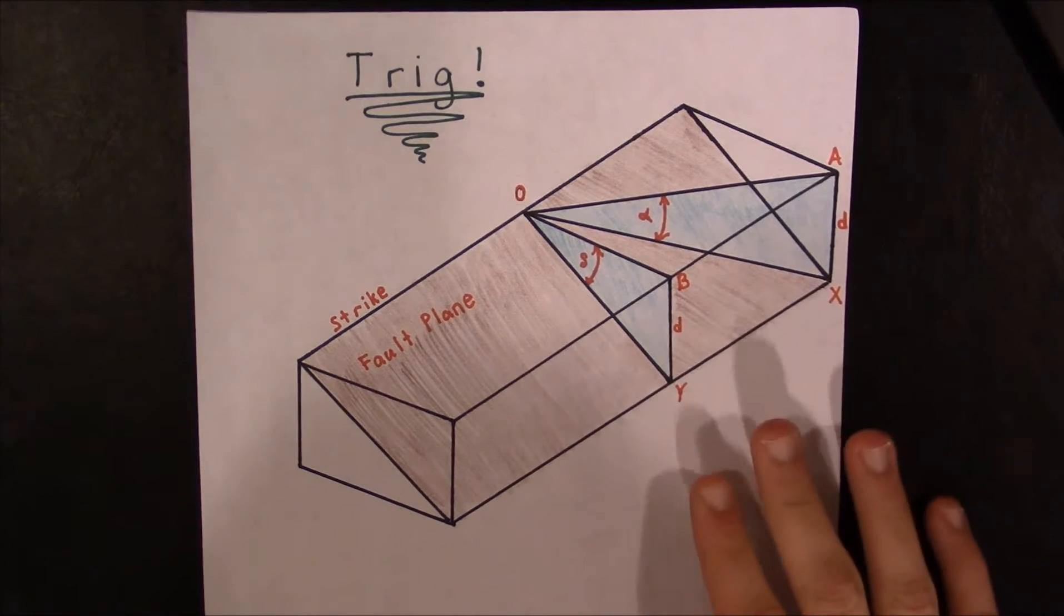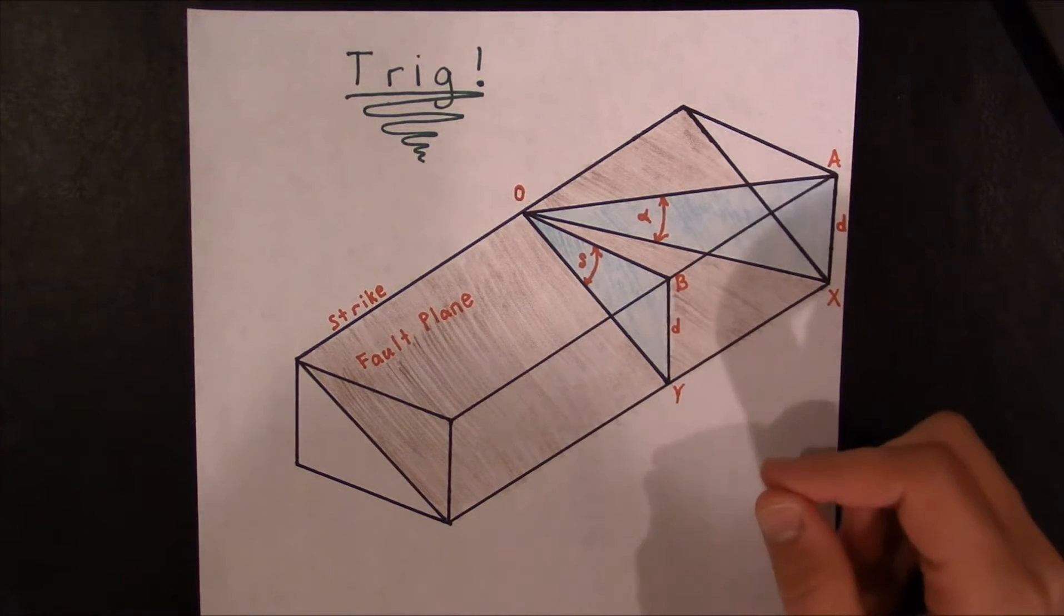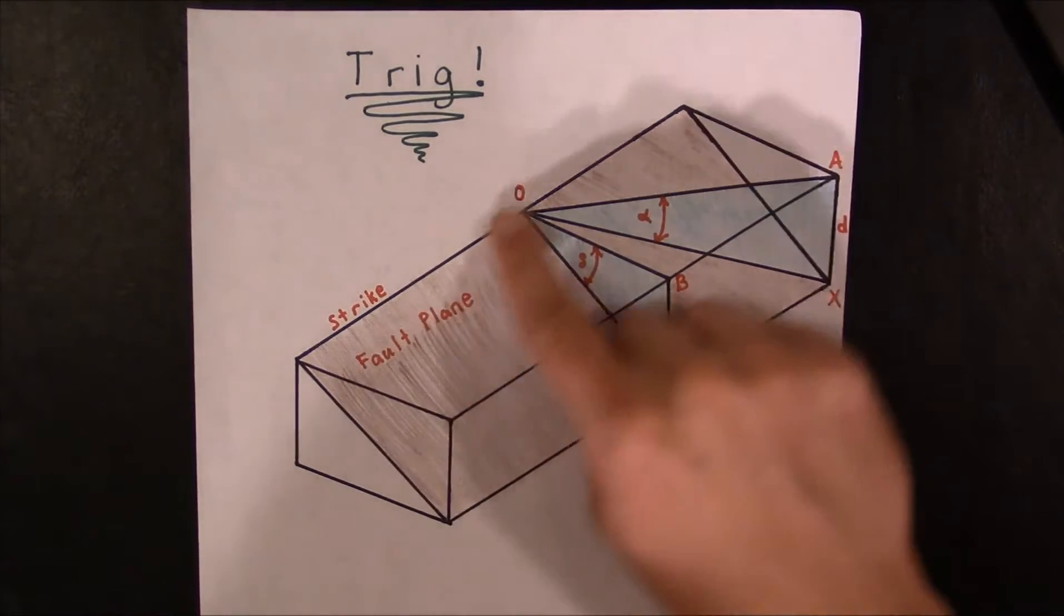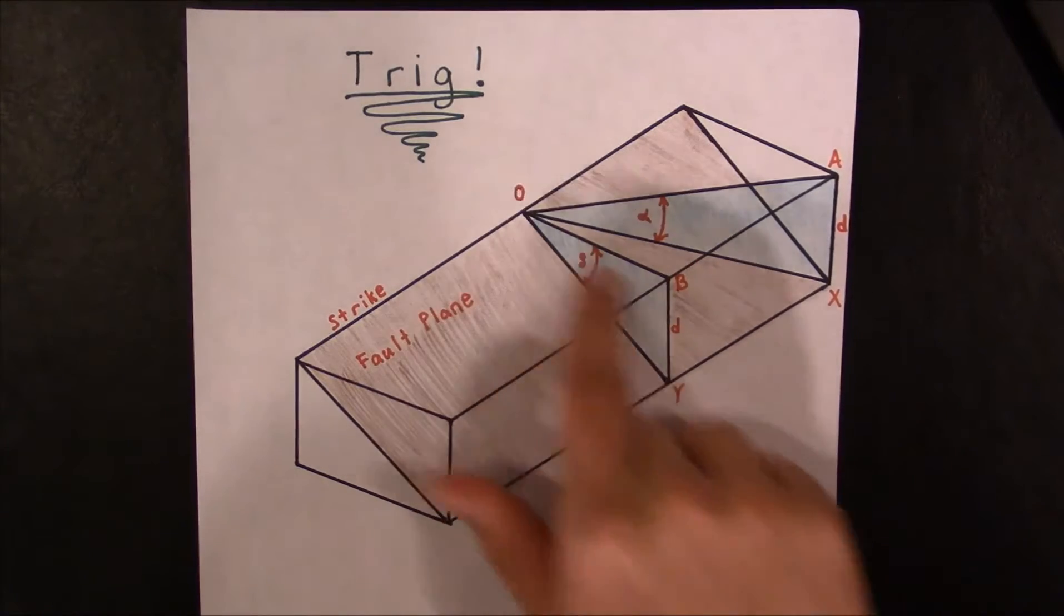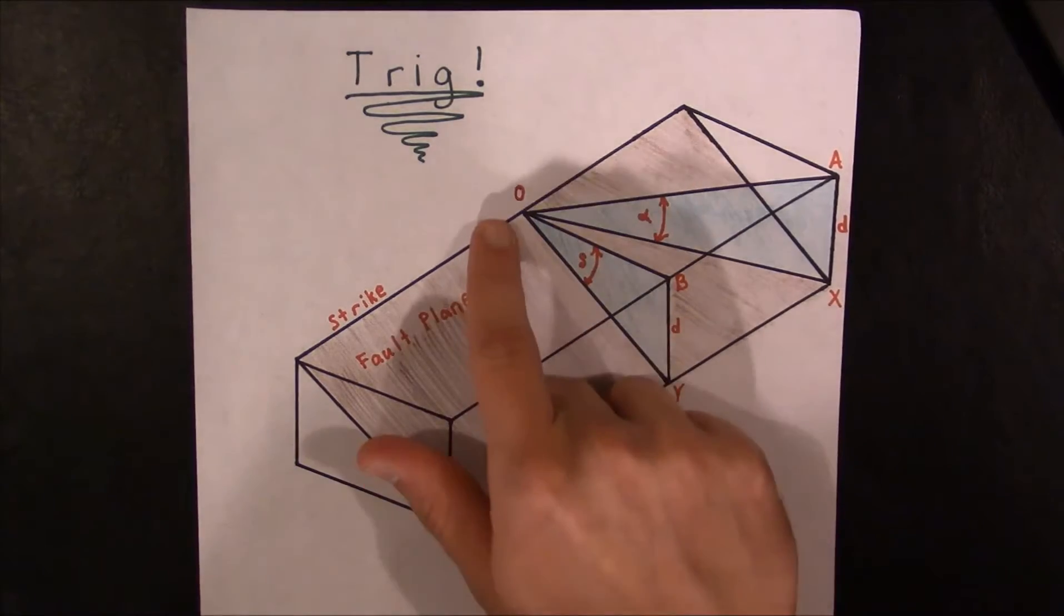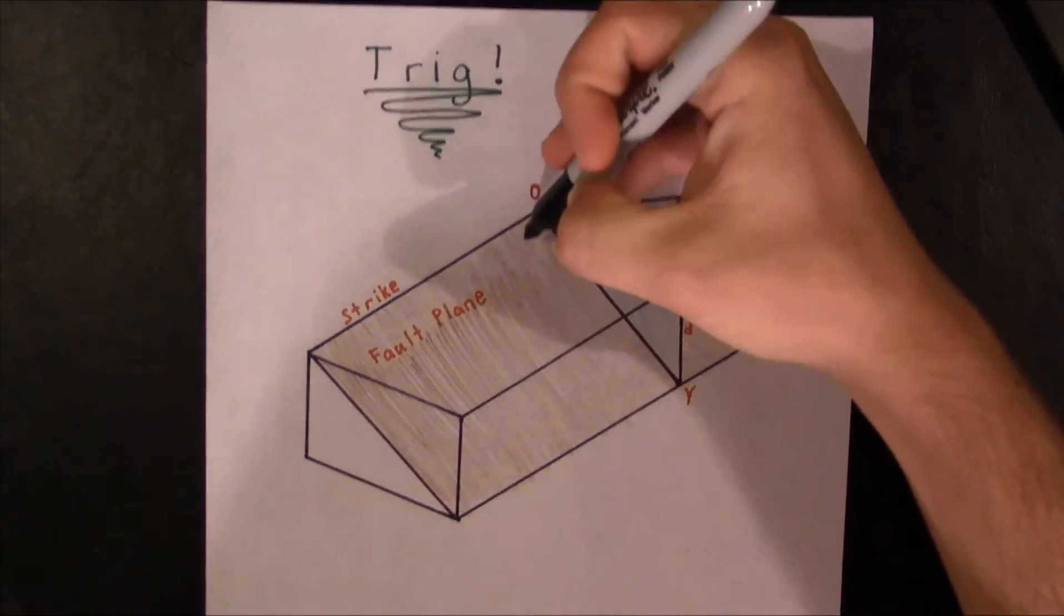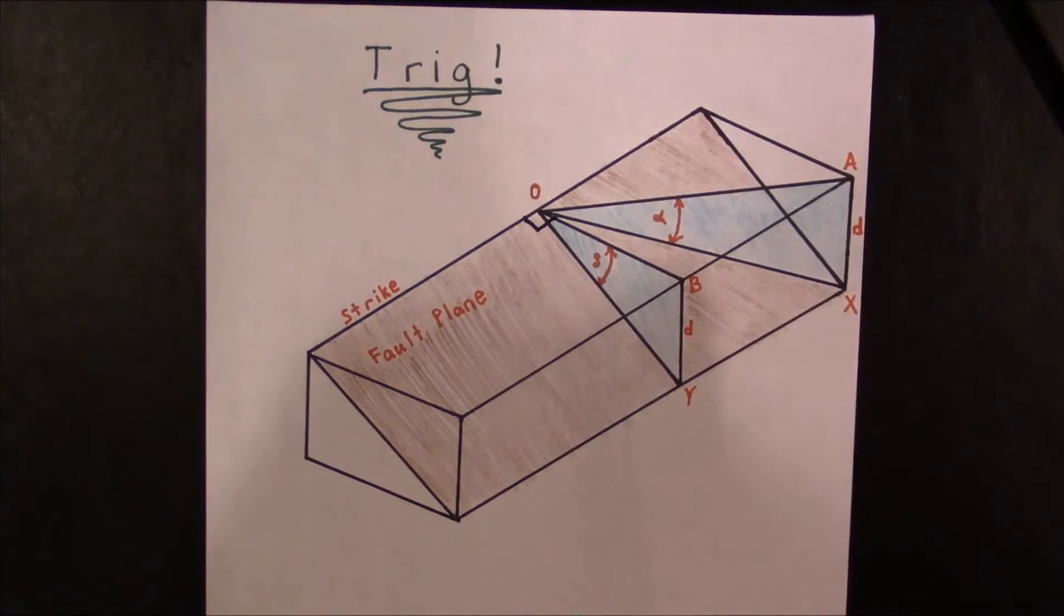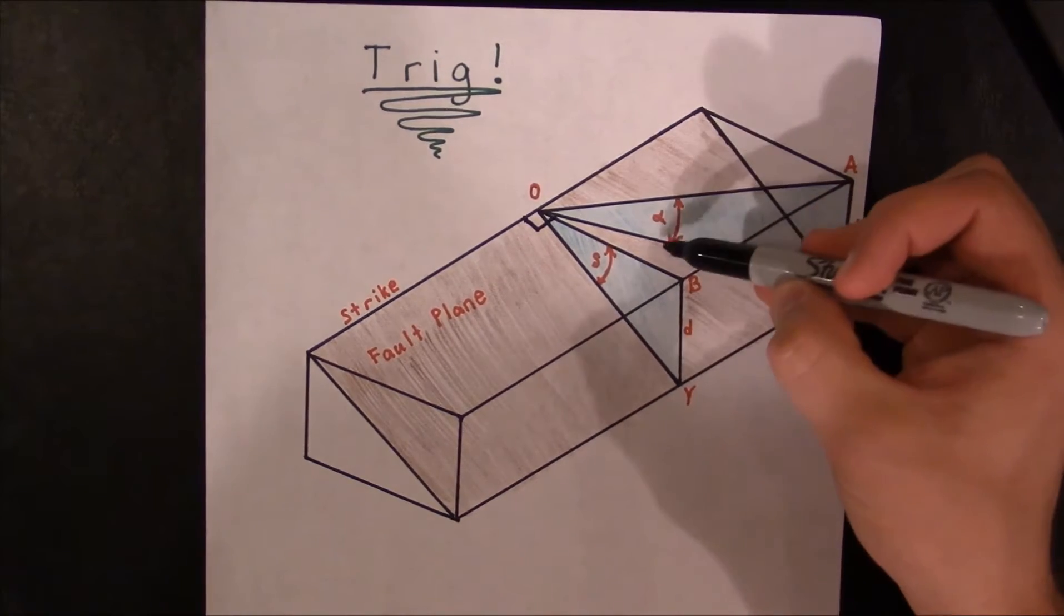So what we have here is a visual representation of what it looks like of an apparent dip versus a true dip. So as you can see, this line right here is the strike. Therefore this has to be the true dip because this is a right angle. Let me go ahead and illustrate that. There is a right angle right here. Therefore this is the true dip of the plane, and then this is an apparent dip.